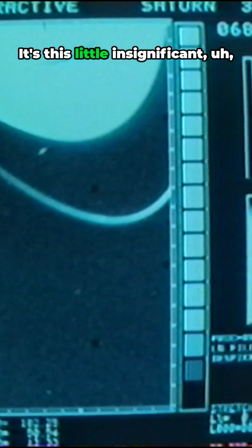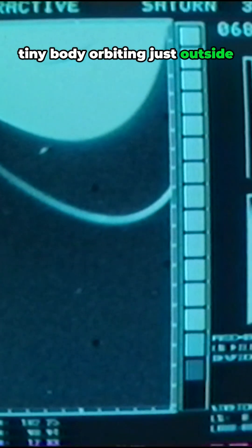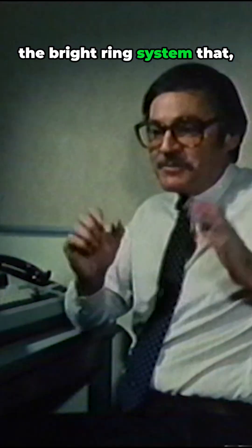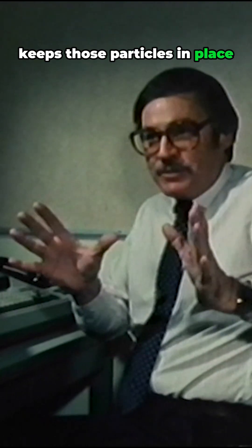It's this little, insignificant, tiny body orbiting just outside the bright ring system that its own gravitational interaction keeps those particles in place.